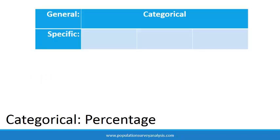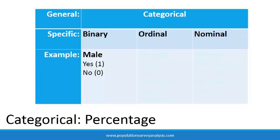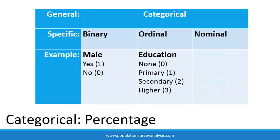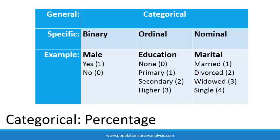Percentages are used to describe all categorical variables, including binary, ordinal, and nominal variables. Binary variables have two values, usually coded as 0 and 1. Ordinal data are categories that follow a logical order, like education level. Nominal data are categories that do not follow a logical order, like marriage status. In variables that have more than two categories, we can think of each category as having a binary response and we calculate a percentage for each category.